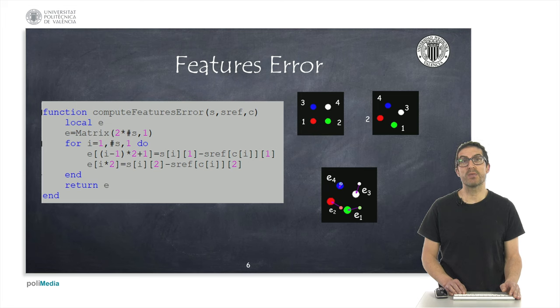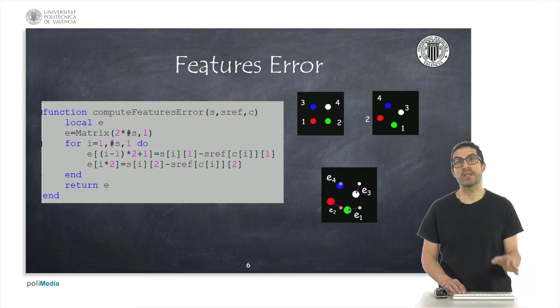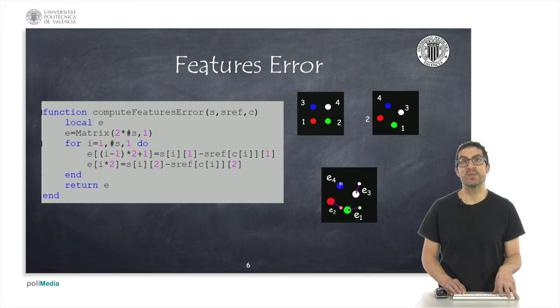So, in order to compute the elements of this vector, we must subtract the elements of the list of detected features with the elements of the list of the reference features, indexed accordingly to the correspondence list.